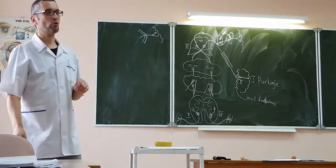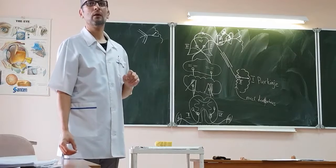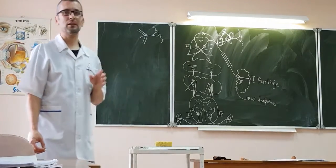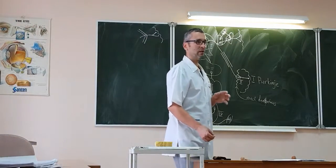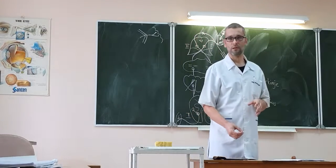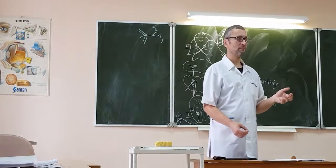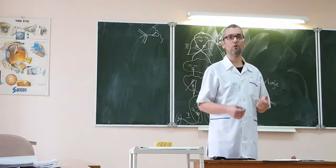The tractus cortico nuclearis must go to the motor nuclei of cranial nerves. There are 12 cranial nerves and only nine of them have motor nuclei. Which nerves don't have motor nuclei? First, second, and eighth. That's why all others have them.